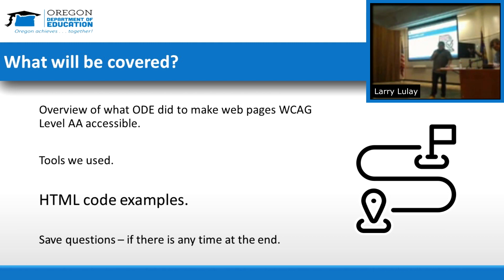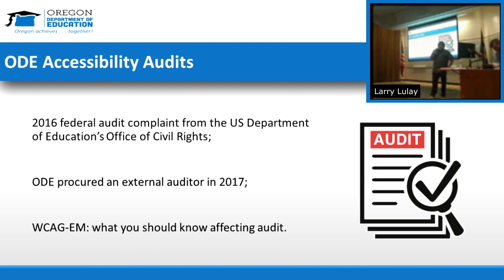In 2016, the Oregon Department of Education was contacted by the Federal U.S. Department of Education Office of Civil Rights with two complaints on our website. They notified us that we were officially under audit. We then discussed the terms of that audit. One of the things we had to do was procure an external auditor, which we did in 2017. That person had to be on their approved auditor list and had to be a trusted tester, so the feds knew we had an auditor that was going to make us toe the line.